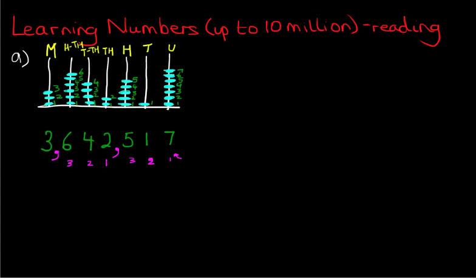What does this number then say? How do you read it? We start from the left. We say three million, and then it's the thousands — six hundred and forty-two thousand. So we've got three million, six hundred and forty-two thousand. Then is the last set of numbers: five, one, seven — five hundred and seventeen. So let's say together: three million, six hundred and forty-two thousand, five hundred and seventeen.